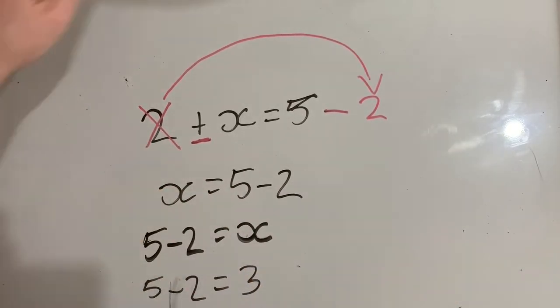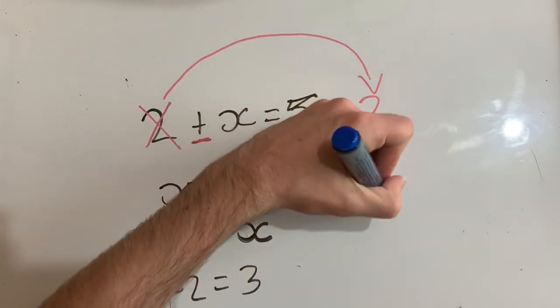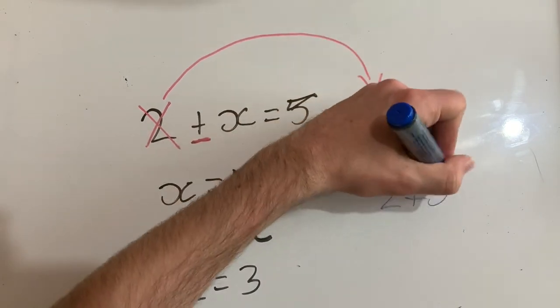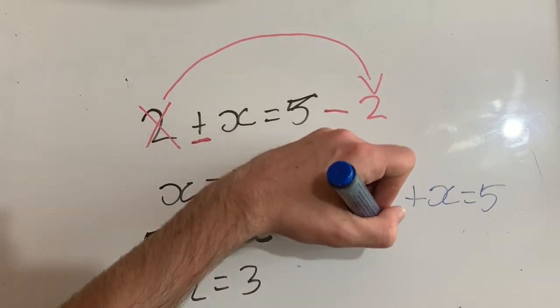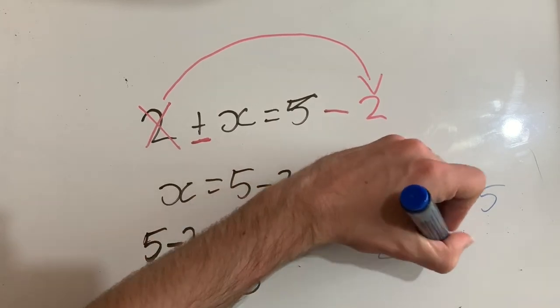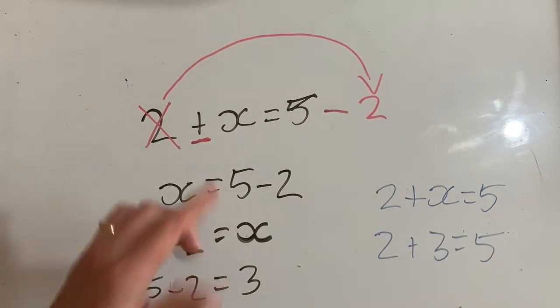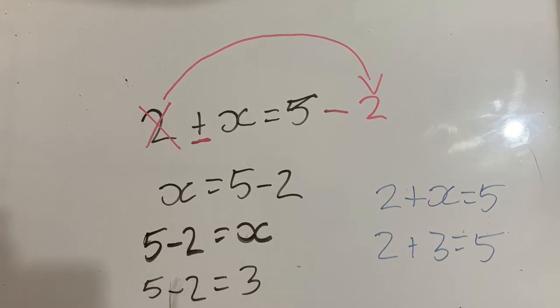So now if I go back to my original equation, which I'm going to write in blue down here, 2 plus x equals 5, I now know that x. I could write down 2 plus 3 equals 5. That is correct. I have found the missing value. That's actually all I needed to do.